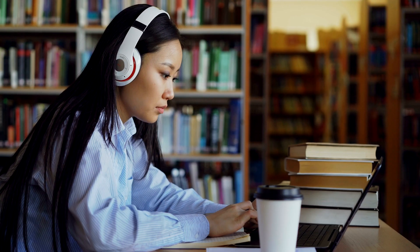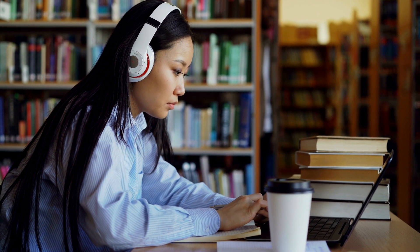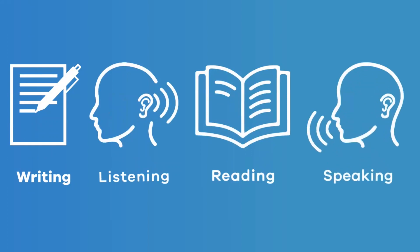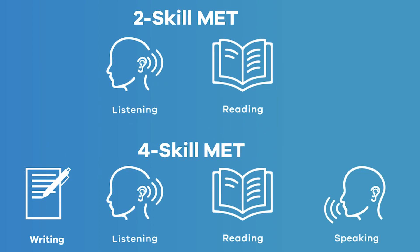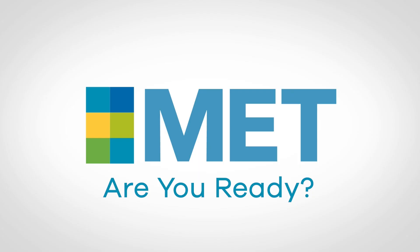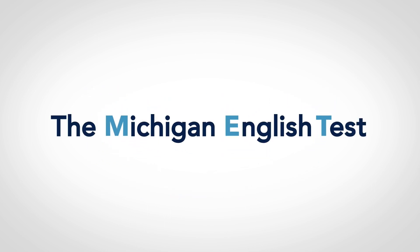As an English language learner, you probably already know that language is usually divided into four foundational skills: writing, listening, reading, and speaking. Whether you are taking the two-skill or the four-skill MET, you will complete the MET reading section as part of your test. Are you ready? Let's get you prepared for your Michigan English Test.